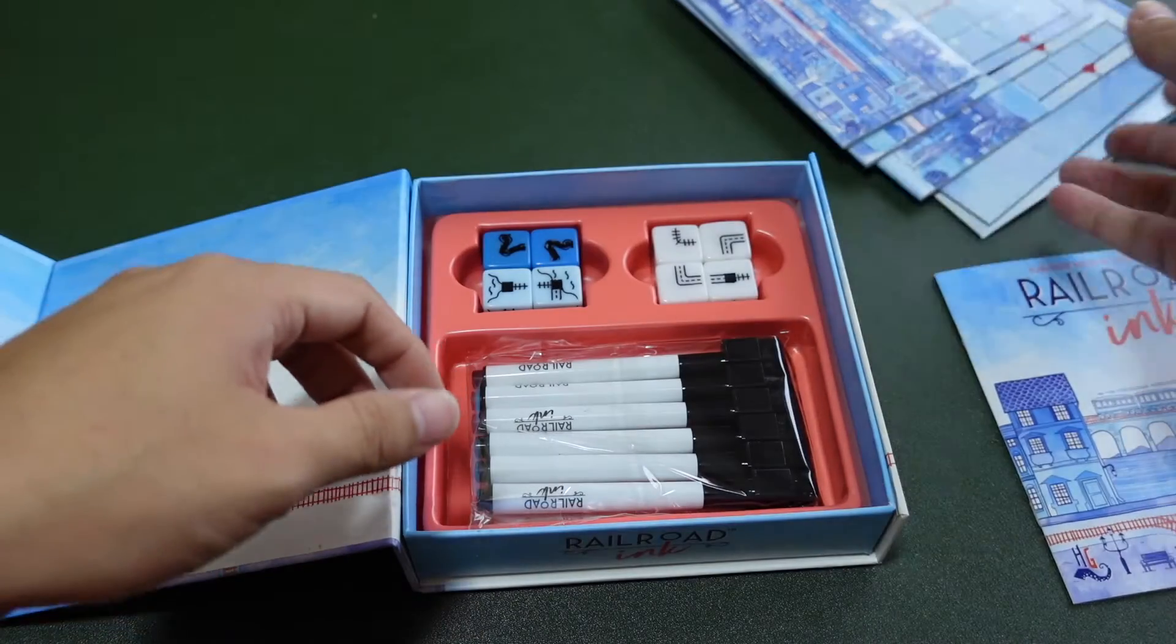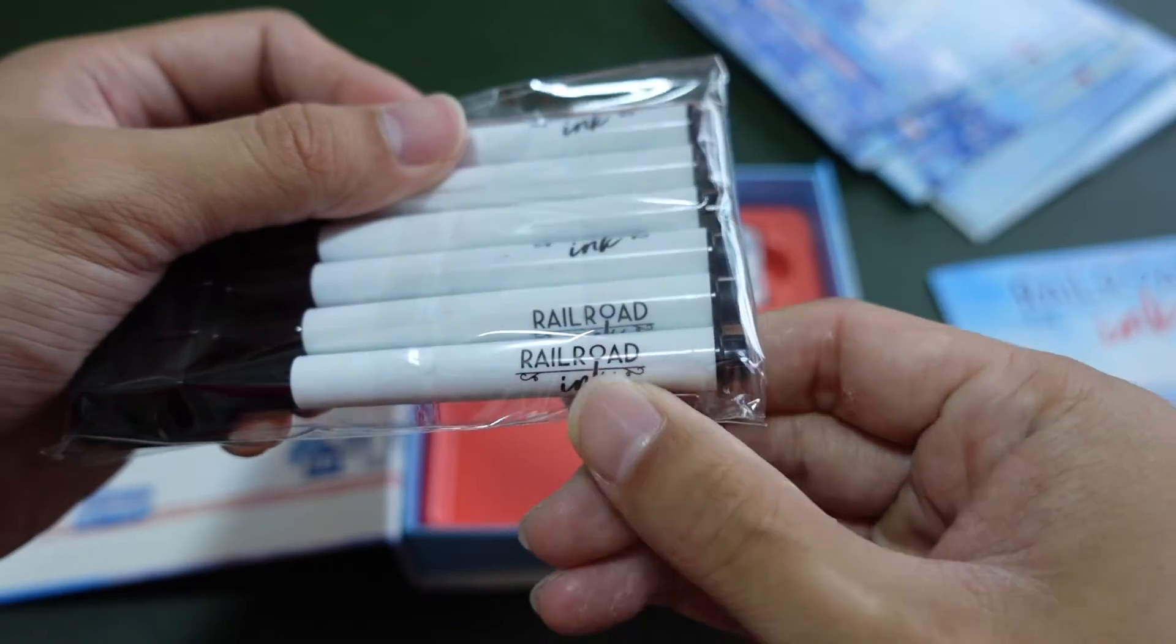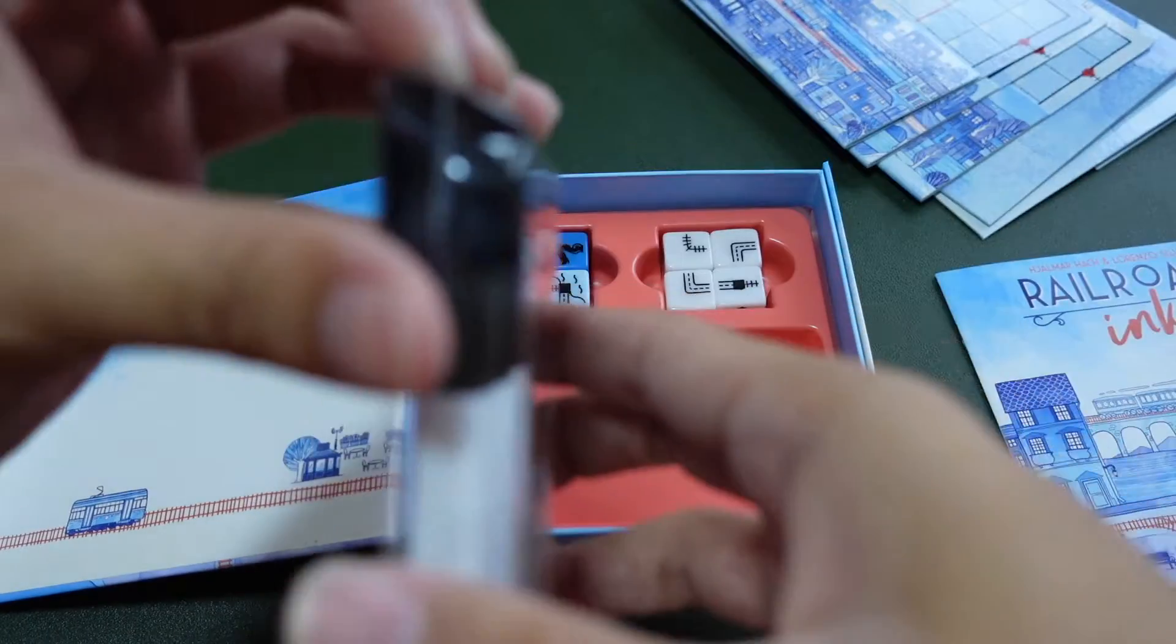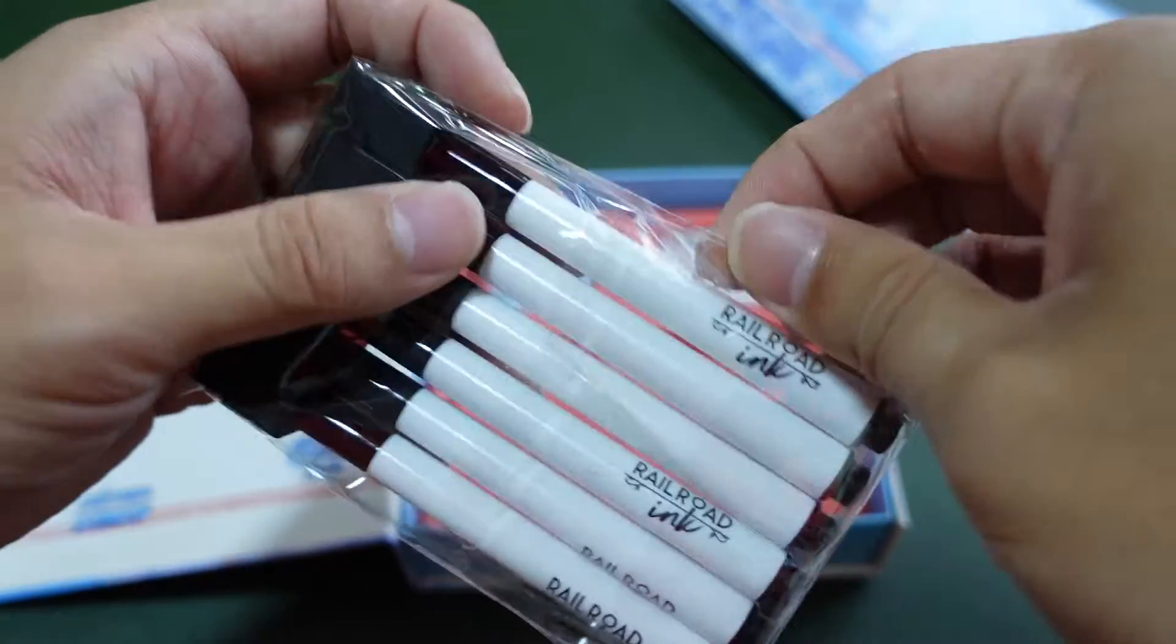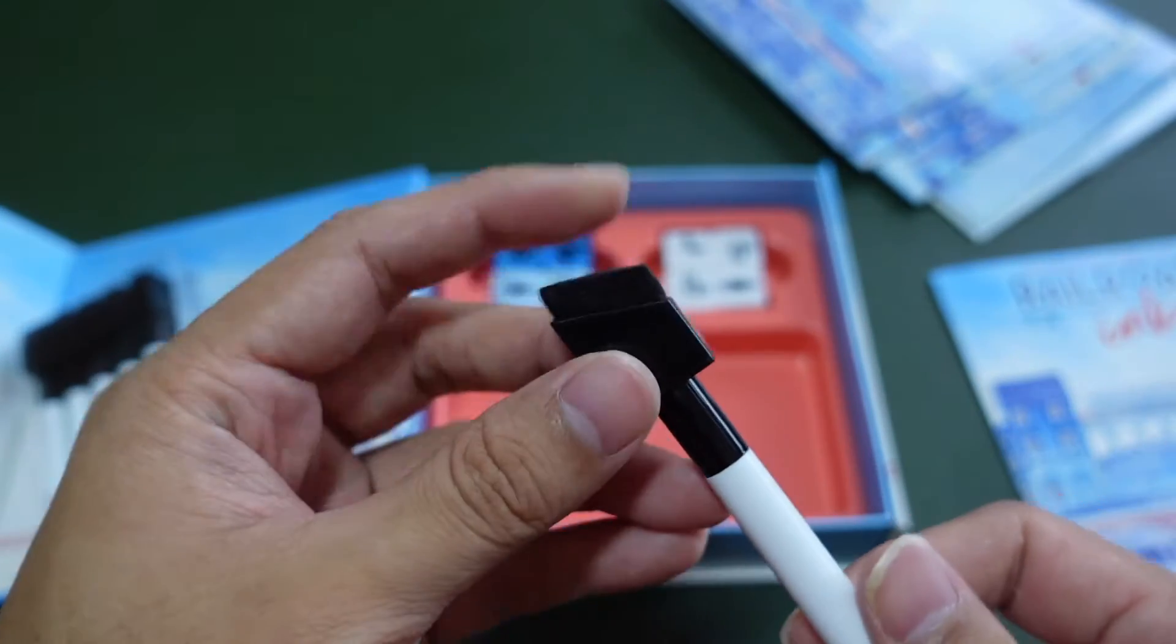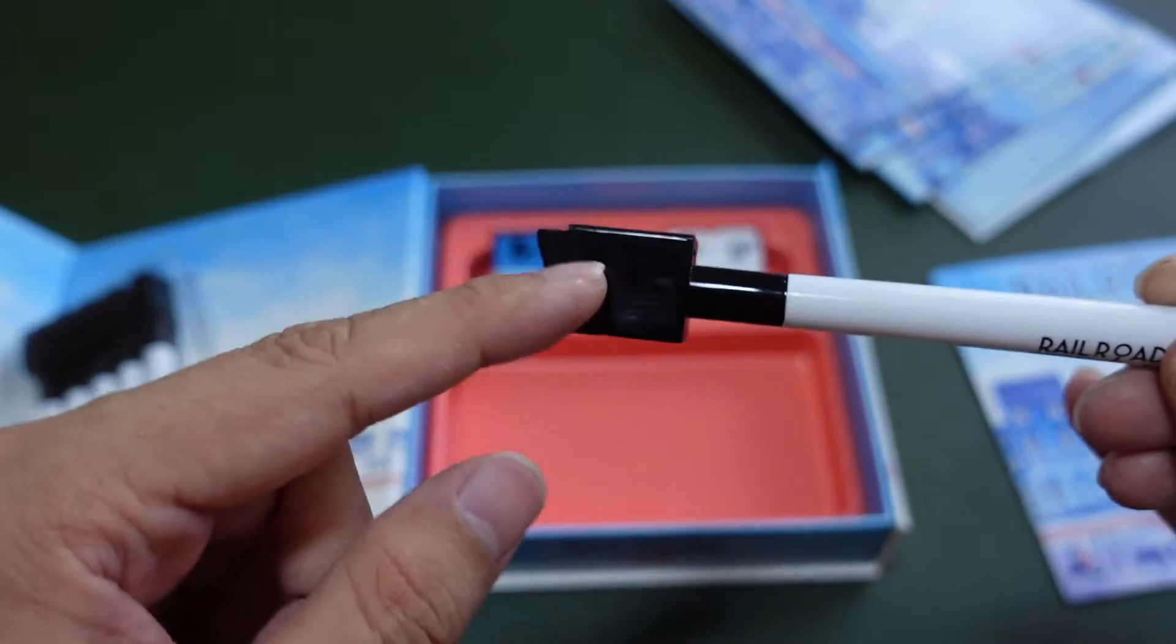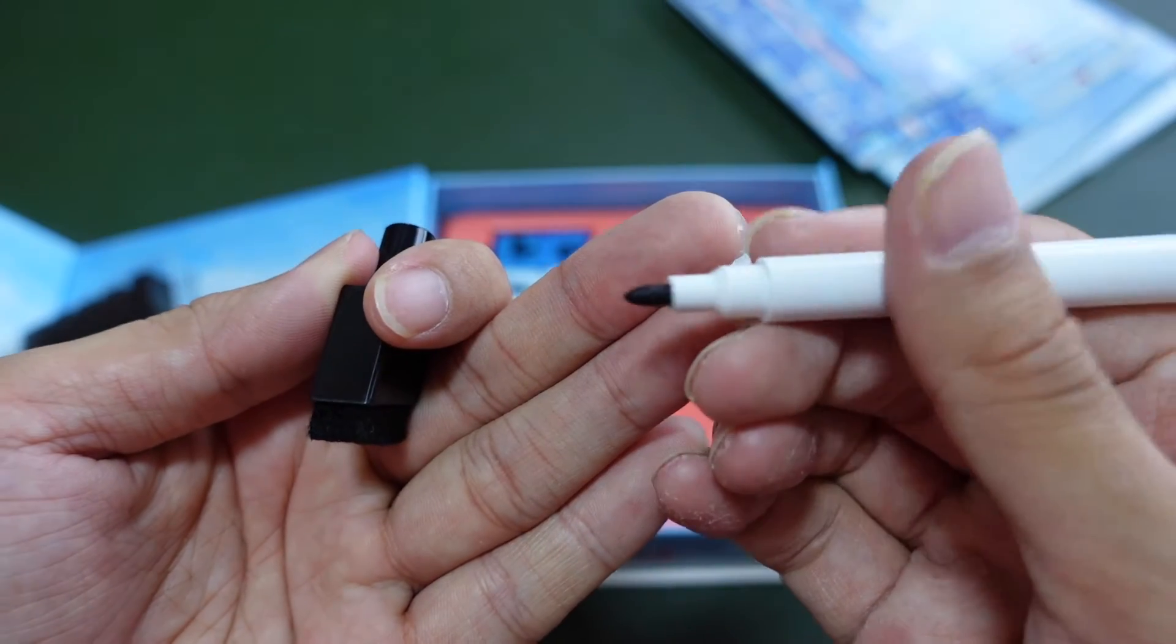These are the markers. They are a bit different from the Wok and Roll ones. The Wok and Roll marker is smaller, not as big as this one.